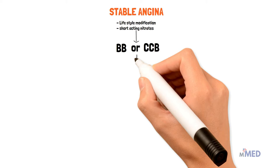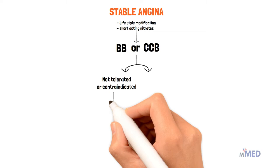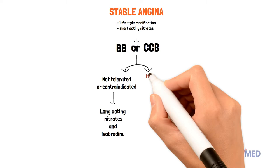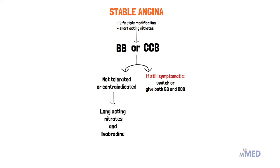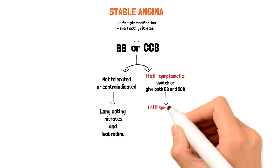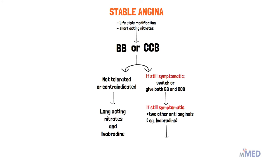Then we can proceed to administering a beta blocker or a calcium channel blocker. It's important to note that if beta blockers or calcium channel blockers are not tolerated or contraindicated, we should continue with long-acting nitrates. If the patient is still symptomatic or continues to have chest pain, we should switch the medications or give both beta blockers and calcium channel blockers. If there is still no response or improvement and the patient remains symptomatic, we can administer two other anti-anginal drugs — for example, ivabradine, which is very common.